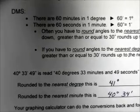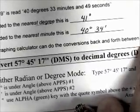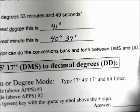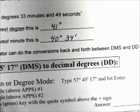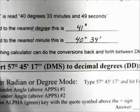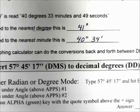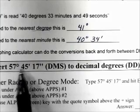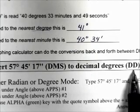Your graphing calculator can do the conversions back and forth between DMS and decimal degree forms. We want to convert 57 degrees, 45 minutes, 17 seconds — DMS form — to decimal degree form.